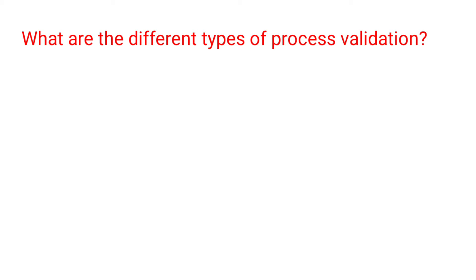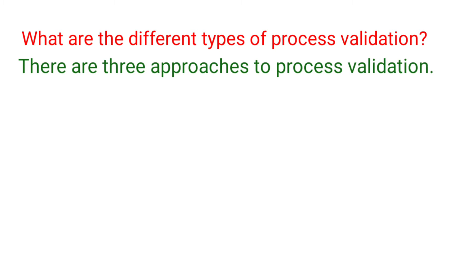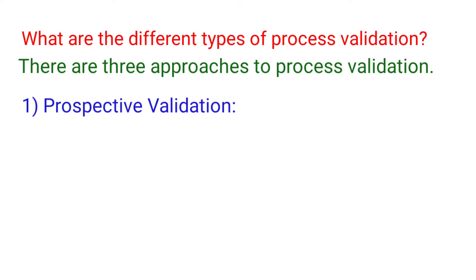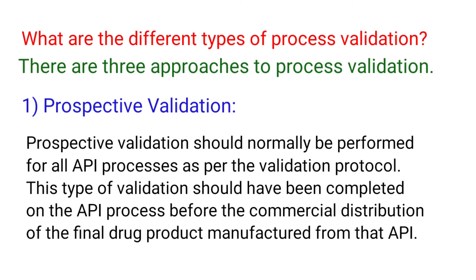What are the different types of Process Validation? There are three approaches to Process Validation. The first one is Prospective Validation. Prospective Validation should normally be performed for all API processes as per the Validation Protocol. This type of validation should be completed on the API process before the commercial distribution of the final drug product manufactured from that API.